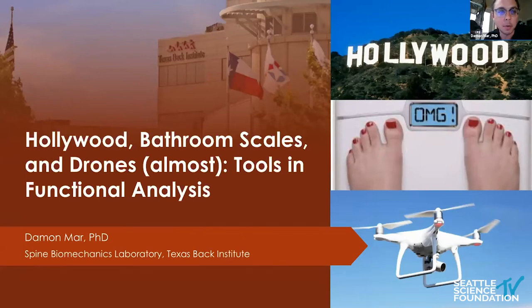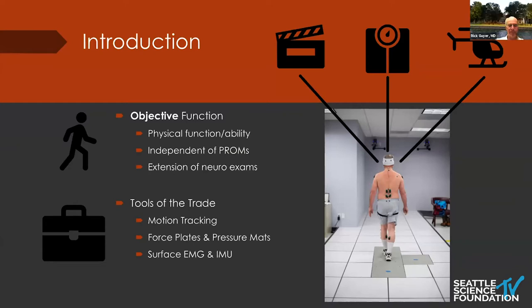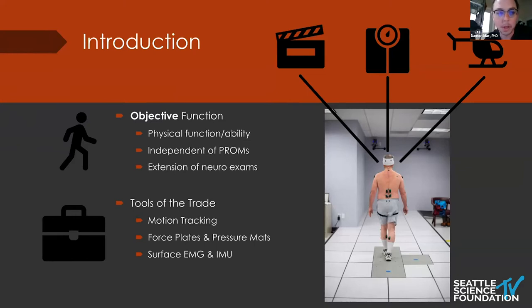We're talking about objective function here — physical function and the ability of our patients to perform daily tasks in life, like lifting, sitting, and walking. These measures should be thought of independently of patient-reported measures of function, like the ODI, and they can also be thought of as extensions of neurologic exams. Rather than a qualitative assessment of gait, we can actually quantify how much someone is moving their knee or moving up and down. Hollywood gets us our motion tracking, Bathroom Scales gets us the concept of force plates and pressure mats, and Drones covers what we do with surface EMG and IMU sensors.